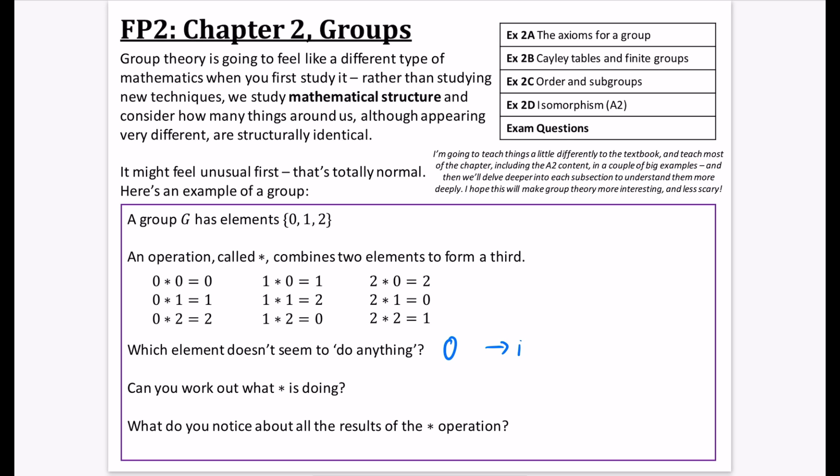So, this element which doesn't seem to do anything is 0. And the name of this element in this particular case is going to be the identity element. You can kind of think about that we've come across in other parts of maths before. The identity in multiplication is 1, and with addition, you can think about the identity element being 0.